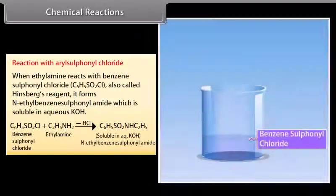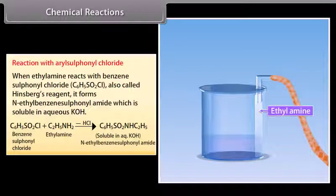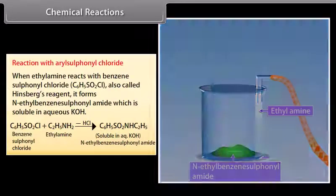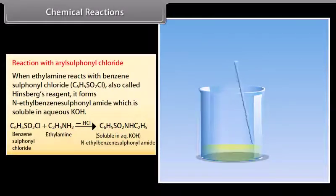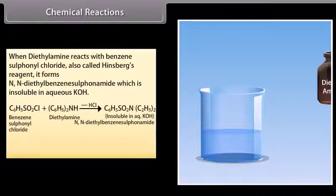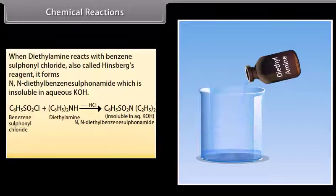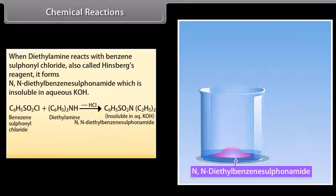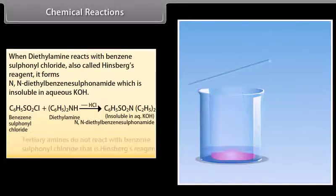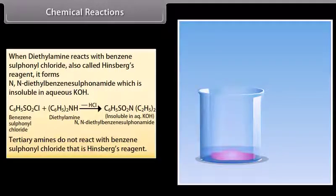Reaction with aryl sulfonyl chloride (Hinsberg's reagent): When ethylamine reacts with benzene sulfonyl chloride, it forms N-ethyl benzene sulfonamide, which is soluble in aqueous potassium hydroxide. Tertiary amines do not react with benzene sulfonyl chloride (Hinsberg's reagent).